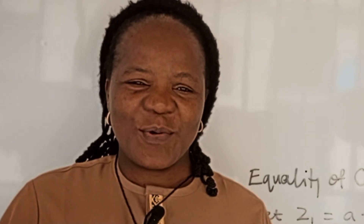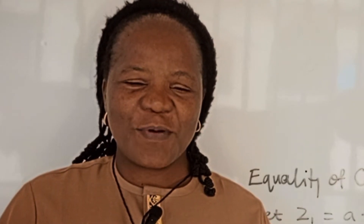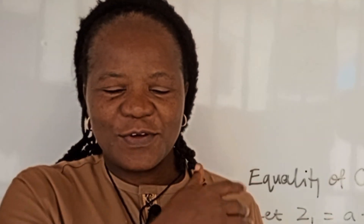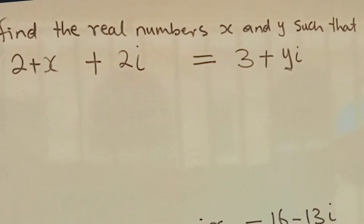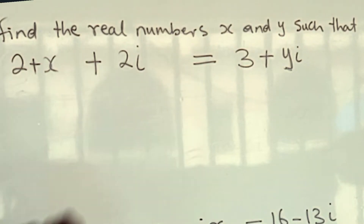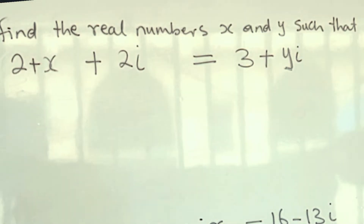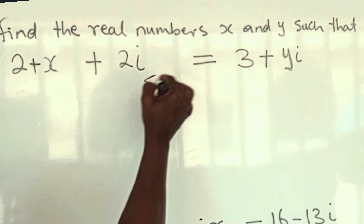Hello, you're welcome once again. We thank God for his mercy and pray for a greater mathematical experience in the name of the Father and of the Son and of the Holy Spirit, amen. The question says: find the real numbers x and y such that x plus 2i is equal to 3 plus yi.